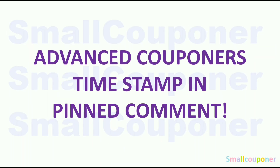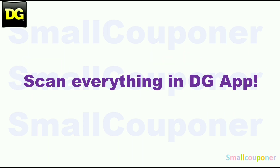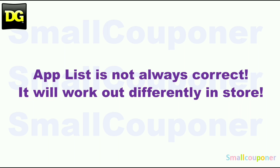For advanced couponers, timestamp and pin comment. For how to use the DG app, make sure to check out the video link in the description box below. I made an updated video because DG did update the app, so the format is a bit different. Make sure that you scan everything in your cart into the DG app, just to make sure that the digitals are still attaching to the products that you are purchasing before you check out at the register. You can also price check in the app. Make sure that you scan the UPC barcode of the product into the app — don't just search for it on the app. The app list is not always correct; it will work out differently in-store.